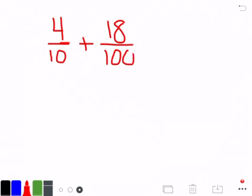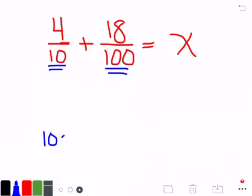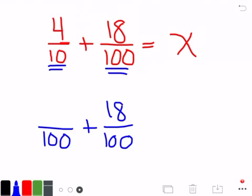So let's look at another one. This time we'll start with 4 tenths plus 18 one hundredths equals the same variable, x. So again, we have different denominators. We have tenths and we have hundredths, but we need to have one hundredths plus one hundredths. So 18 one hundredths is already a one hundredths fraction. We need to take 4 tenths again, and we need to convert that into a fraction that would be equivalent of hundredths.